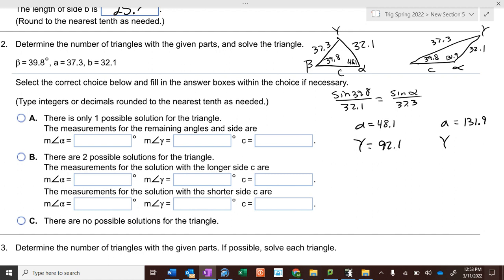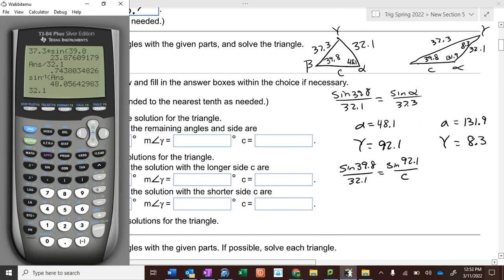So 8.3. Okay, so then you use the law of sines to figure out the other side c. So the sine of 39.8 over 32.1 equals the sine of 92.1 over c. So 32.1 times the sine of 92.1 divided by the sine of 39.8 is 50.1.